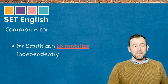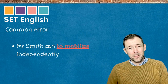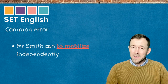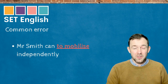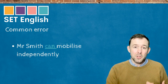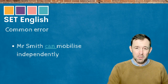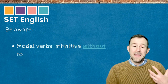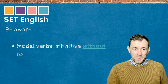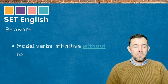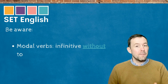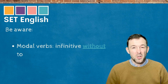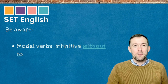So, this common error: 'Mr. Smith can to mobilize independently' — it's something we should avoid. We shouldn't be putting 'to' with 'can,' with 'might,' with 'should.' They shouldn't have 'to.' It should be like this: 'Mr. Smith can mobilize.' What we need to remember is modal verbs have an infinitive without 'to.' It's those half modal verbs — 'be able to' and 'have to' — that confuse things. So if you're using 'might,' 'must,' 'can,' or 'should,' avoid 'to.' Don't make that mistake.